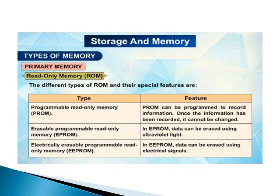There are different types of ROMs. Programmable read-only memory (PROM): PROM can be programmed to record information, but once the information has been recorded, it cannot be changed. Erasable programmable read-only memory (EPROM): data can be erased using ultraviolet light. Electrically erasable programmable read-only memory (EEPROM): data can be erased using electric signals.